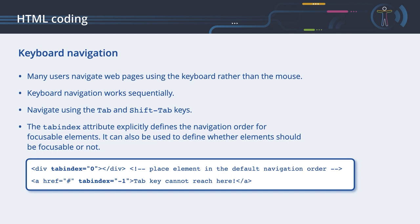Typically, the tabbing follows the sequence in the HTML code. The tabindex attribute explicitly defines the navigation order for focusable elements within a page. It can also be used to define whether elements should be focusable or not. If an element should be placed in the default navigation order, use a tabindex value of 0. To remove an element from the default navigation flow — for example a modal dialog box — use a value of minus 1. Numeric tabindex values greater than 0 define the sequence used for keyboard navigation.